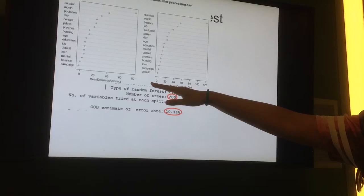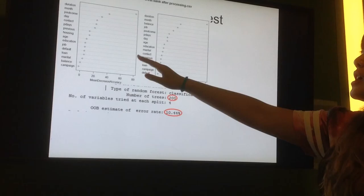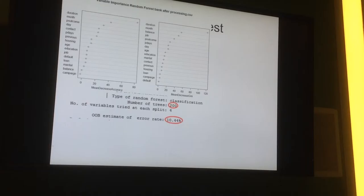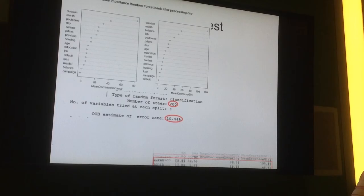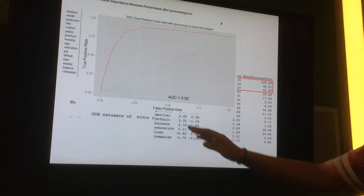For mean decrease accuracy, we can see that variables with a large number of mean decrease accuracy means that variables are very important for the classifier to predict the target values. And the mean decrease Gini is a measure of the purity of each variable when a variable is used to split a node. So from these two plots, we can see that the duration, month, and P outcome are very important variables.